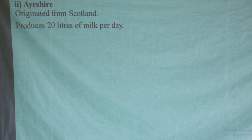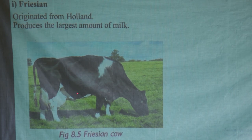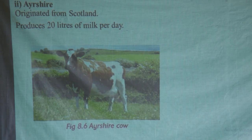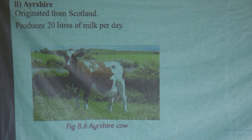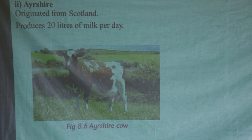Looking at the Ayrshire: this breed originates from Scotland. The Friesian is large in size with a very large udder, meaning it can give more milk. The Ayrshire is also good for milk production — they also have big udders. In terms of milk production, the Ayrshire produces about 20 liters per day, while the Friesian produces 20 liters and above per day. You can go for Ayrshire or you can go for Friesian.